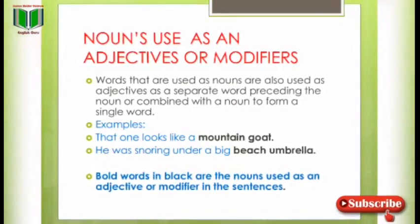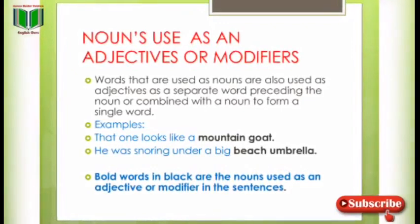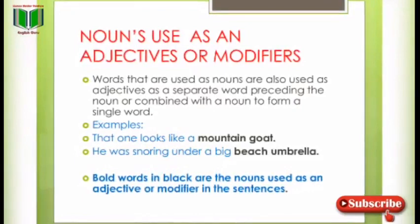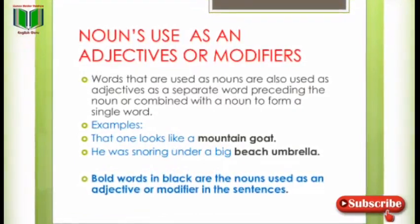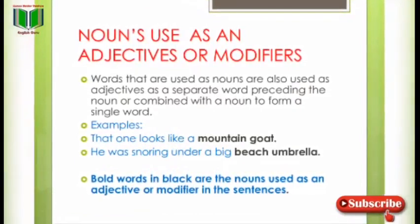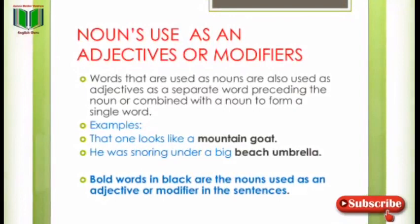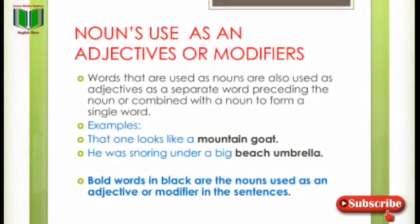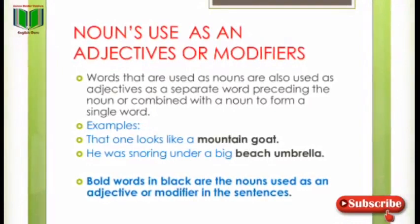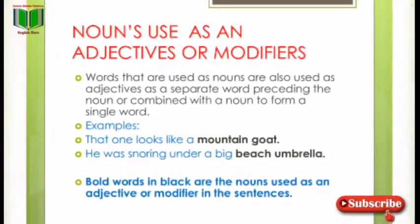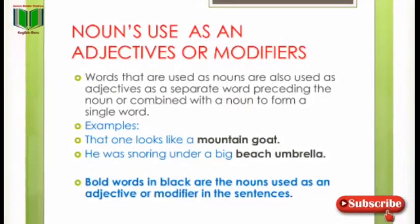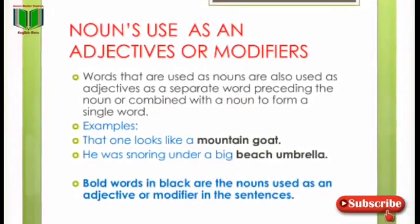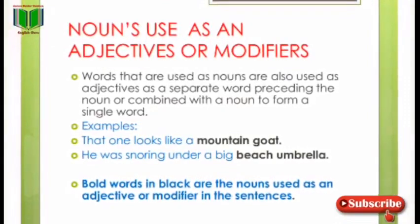Nouns used as adjectives/modifiers — nouns بھی adjectives اور modifiers کے طور پر استعمال ہوتے ہیں۔ Words that are used as nouns are also used as adjectives as a separate word preceding the noun, or combined with a noun to form a single word۔ Examples: 'That one looks like a mountain goat.' 'He was snoring under a big beast.'